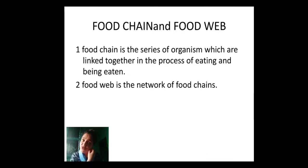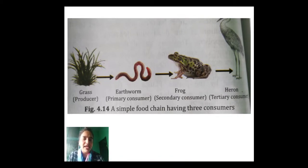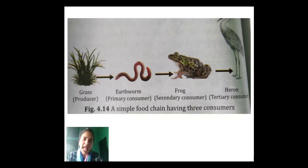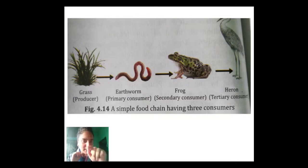Next, we have food chain and food web. Food chain is the series of organisms which are linked together in the process of eating and being eaten. Look at this figure. Here, the series of organisms is grass, earthworm, frog, and heron. Earthworm is eating grass and being eaten by frog — this is your food chain.